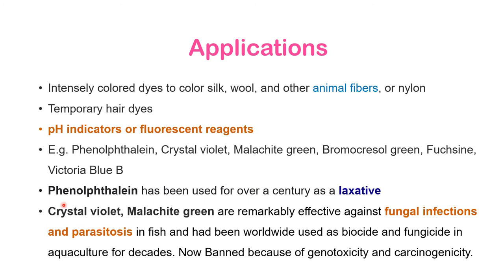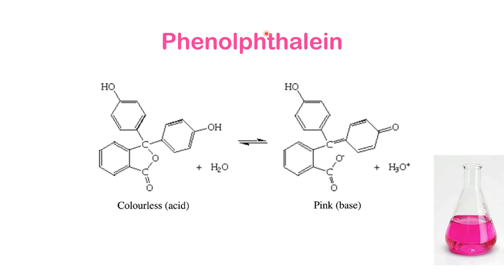Previously, phenolphthalein was used as a laxative for over a century. Crystal violet and malachite green were used to treat fungal infections and parasitosis in fish and other marine organisms, serving as biocides. However, after decades of use, they are now banned because they are genotoxic and carcinogenic. Pharmaceutical applications are now largely restricted to indicators — phenolphthalein being the most popular, used by every pharmacy student for determining end points of acid-base titrations.